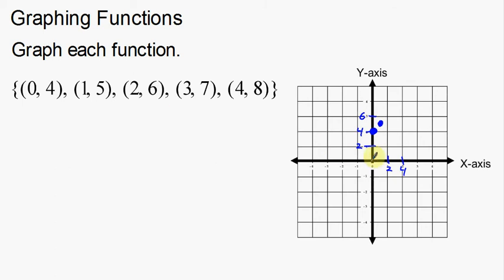Next is 2, 6. So 1, 2, and then 1, 2, 3, 4, 5, 6. It looks like we're getting a little bit of a line here. Let's see what the rest of this looks like.